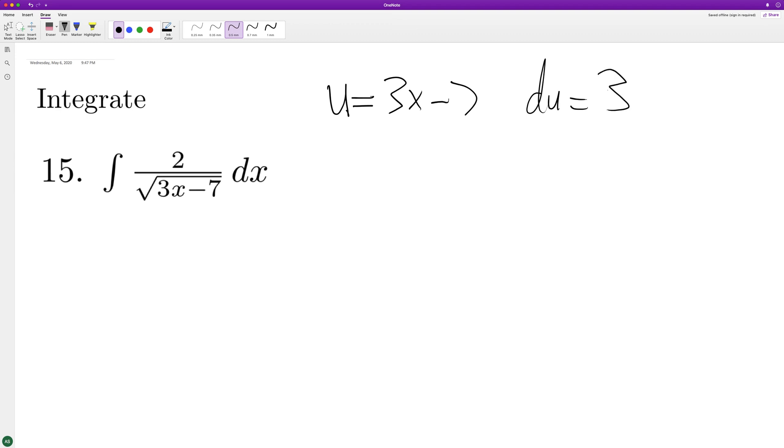So we have 2 on top there. So to get DU equal to DX, we need to multiply it by 3 halves. Excuse me, 2 thirds.